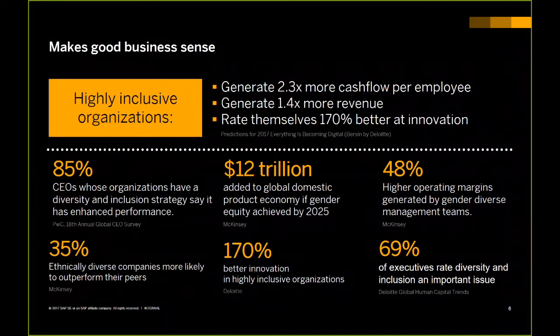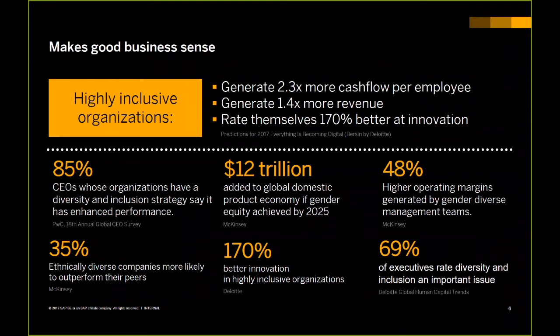A lot of times people ask why we even care about a D&I strategy. When I came in five years ago, it was still seen as a nice-to-have strategy. But the reality is it actually makes tremendous business sense. If an organization is inclusive — not just getting a diverse mix of individuals but also making the organization inclusive — the amount of cash flow per employee is 2.3 times higher. That's unbelievable, especially when employees in HR are often seen as a cost center. The ability to say they're generating 2.3 times is tremendous.